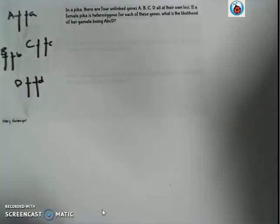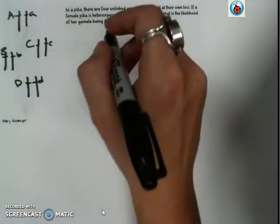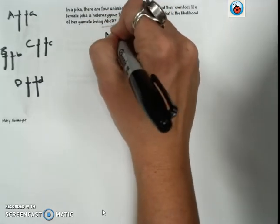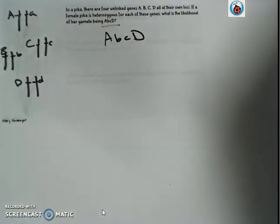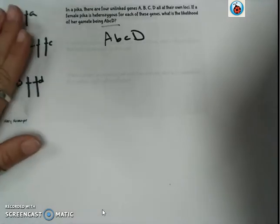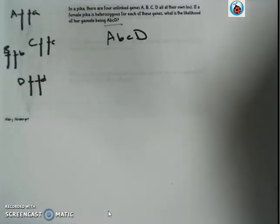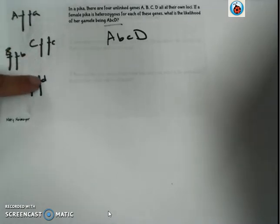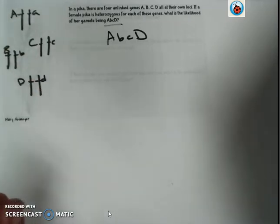And what is the likelihood that her gamete will produce this combination of alleles? So basically we are trying to see all the different possibilities that could happen due to independent assortment when these chromosomes move to the middle of the cell and then they separate.